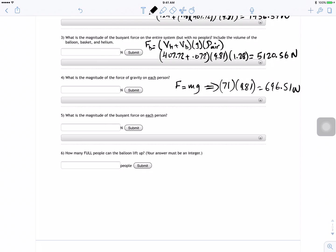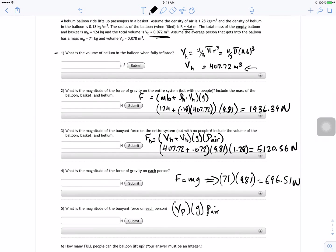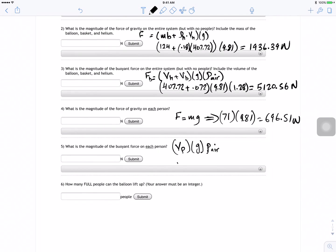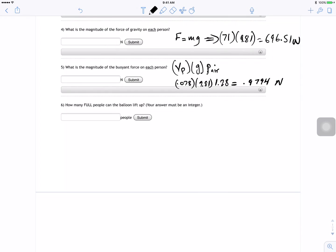What's the magnitude of the buoyant force? Remember it's the weight displaced by the material. So in this case, the volume of the person times g times the density of the air. Volume of the person which is 0.078 times 9.81 times 1.28 is going to be equal to 0.9794 Newtons.